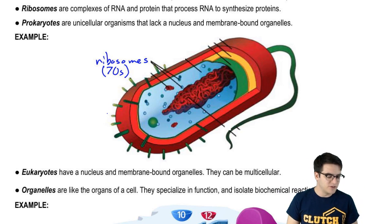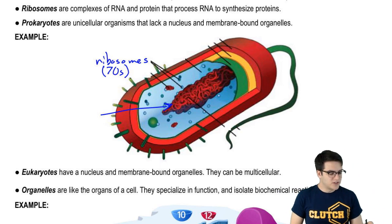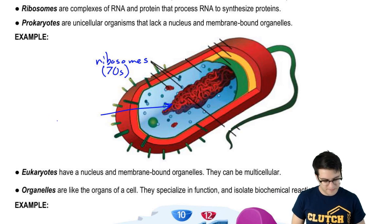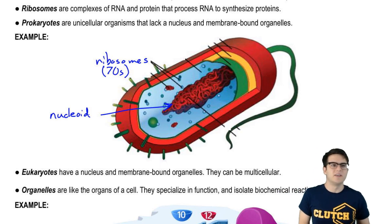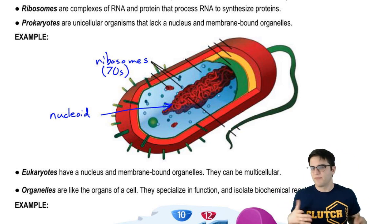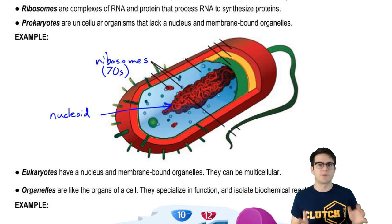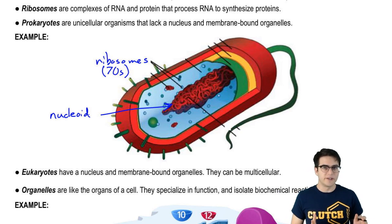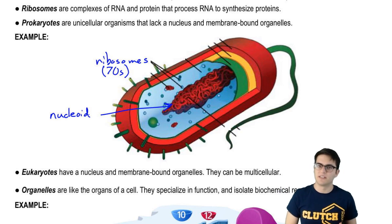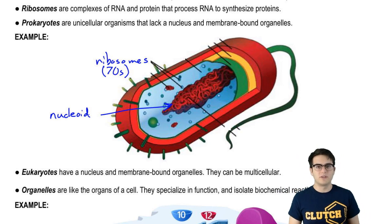Even though prokaryotes don't have a nucleus, they obviously have to have DNA. They actually store their DNA as a dense mass in the center of the cell that we call a nucleoid. You may have heard the term humanoid — to describe something that's kind of human-shaped. That's just what nucleoid means too: it's not a nucleus, but it's got the form of a nucleus. The major difference between the nucleoid and the nucleus is that the nucleoid has no membrane enclosing the DNA, whereas the nucleus is a membrane-enclosed structure. We'll talk more about the nucleus in a later video.